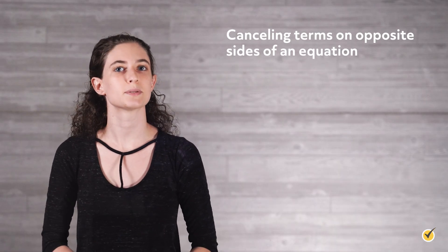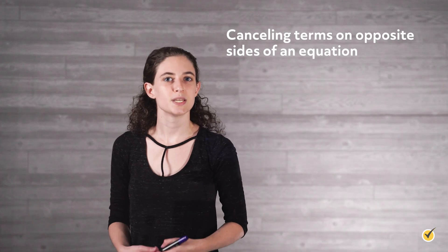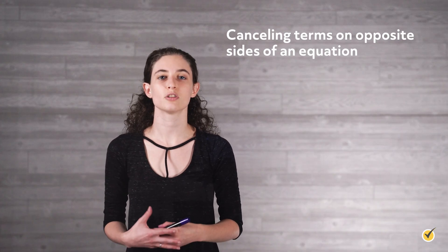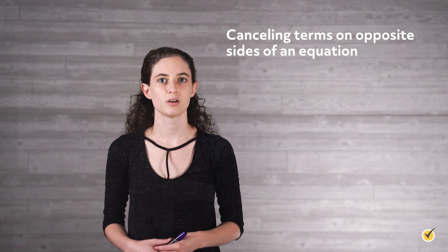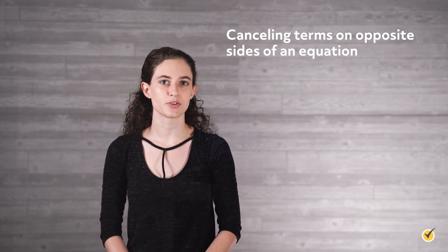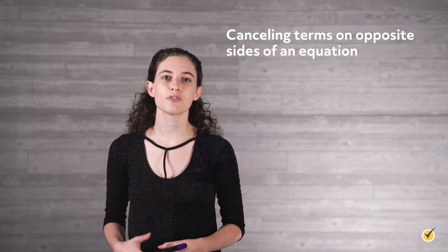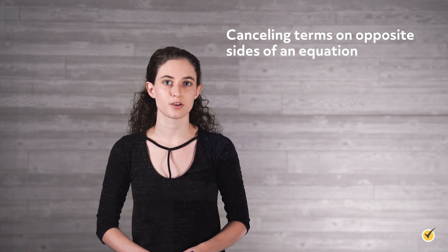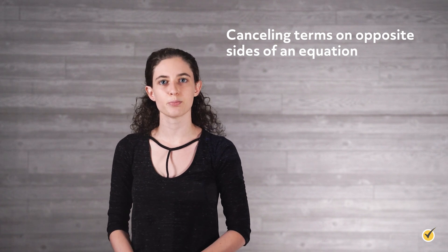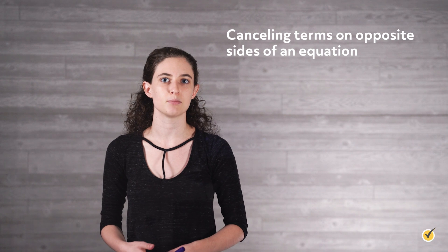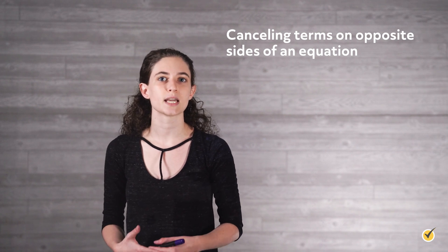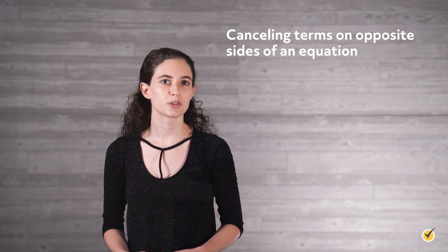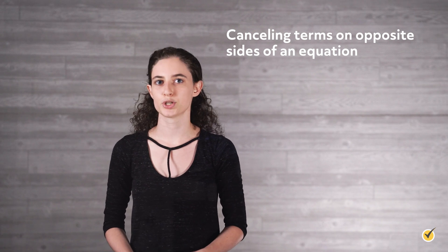Now on to the third and final concept we're going to cover: cancelling terms on opposite sides of an equation. Sometimes, manipulating terms in an equation is called cancelling, or cancelling out. Two terms on opposite sides of an equation can be cancelled if and only if they exactly match each other. They must have the same variable raised to the same power and the same coefficient. Cancelling can be done by using any of the four operations, but there is a more specific way to think about what we're doing.